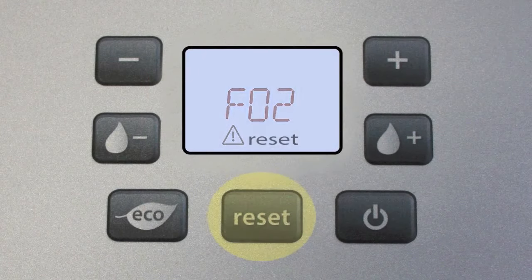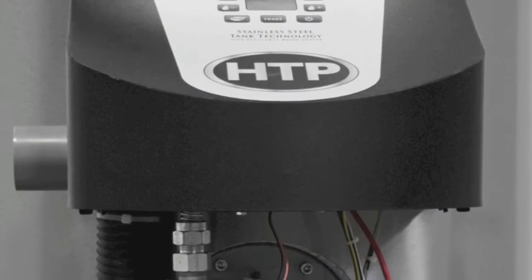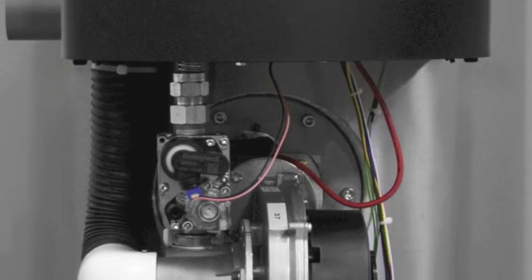Manually reset control and observe operation. If code clears and unit operates, annual maintenance should be performed to allow inspection of heat exchanger for excessive moisture.